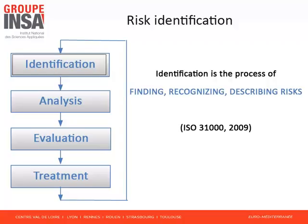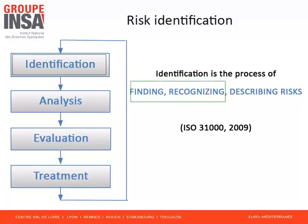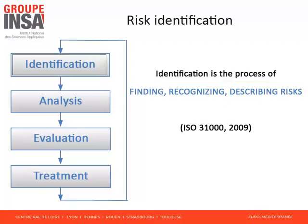The risk identification step aims at drawing up a complete list of the potential risks. The ISO definition stipulates two activities: first, finding or recognizing risks; second, describing the risks. The associated textbook suggests methods to implement the first activity. For the second activity — that is, describing risk — we will use a model now introduced.